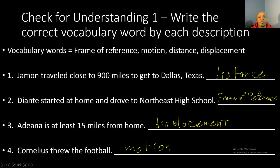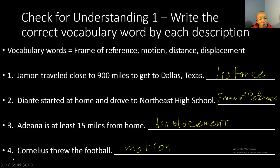Let's see how you did on your first check for understanding. Number one: Jamar traveled close to 900 miles to get to Dallas, Texas — 900 miles refers to distance. Number two: Dion started at home and drove to Northeast High School — his start place was home, so his frame of reference is home. Number three: Adena is at least 15 miles from home — that's displacement. Number four: Cornelia threw the football — since the football is moving, the football is in motion, which is a change in the object's position with respect to time.